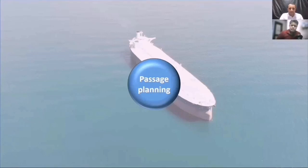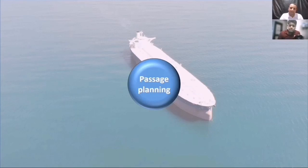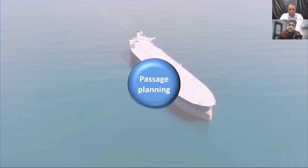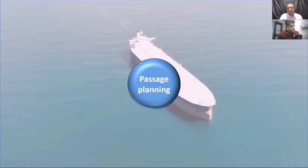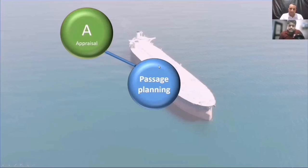You don't have to worry too much about the technical words — you have to understand what we are trying to do here. So when we are planning a passage, it's just like you're traveling to some new place. Let's say you live in Alexandria and you want to go to Sharm el-Sheikh — you've never been there. What is the first thing that you do? You collect information about Sharm el-Sheikh: which areas will I go through, how will I get there? That first part is always you're looking through Google and YouTube, trying to find out more and more about that place and how to go there. So the first step to any passage plan is called appraisal.